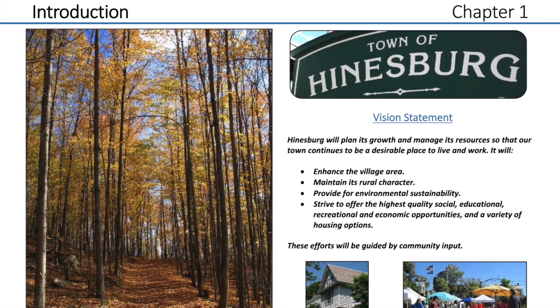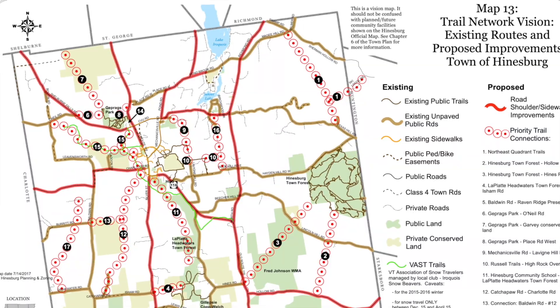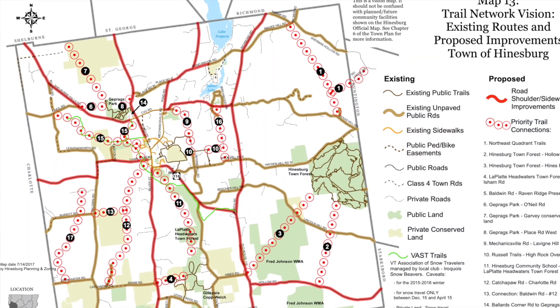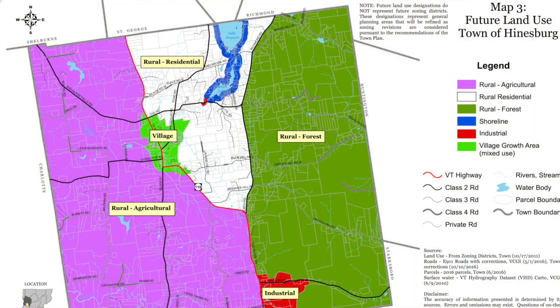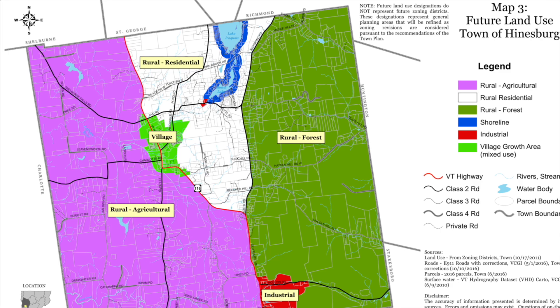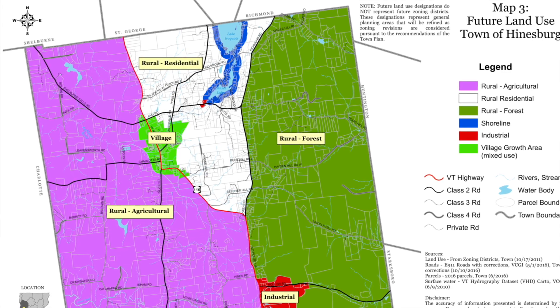A great example: the Hinesburg Town Plan has an implementation chapter. They list all the goals and policies included in the plan, assign responsibility to different parts of the municipal government, and provide a timeline and a sense of the budget. That's taking a big-ticket item like a zoning code or a particular policy and breaking it up into smaller steps — and assigning responsibility is a critical piece.